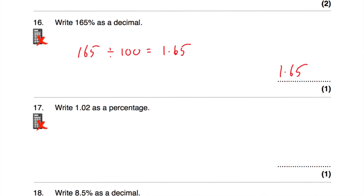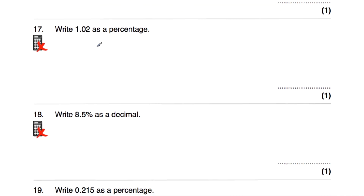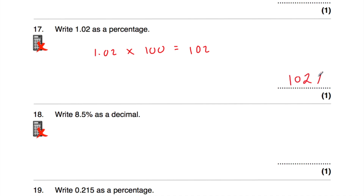Question number seventeen says write 1.02 as a percentage. Take 1.02 and times it by 100, so we're moving the digits two columns to the left. The 1 in the units moves into the tens and then into the hundreds, giving 102. So that's 102% as a percentage, and that makes sense because if 1 is 100%, then 1.02 would be 102%.